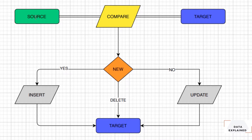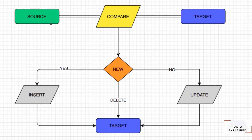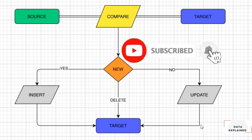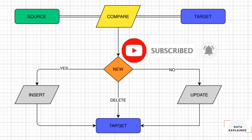So only new customers or new records will be inserted into your target. How do you identify that? You just need to compare both your source and target. If you identify a record as new, you basically just insert it into your target. Let's say a customer's last name has changed — that customer is an existing customer already in the system, so you don't need to insert a new record and delete the previous one. You just go the update route and update that customer's last name.